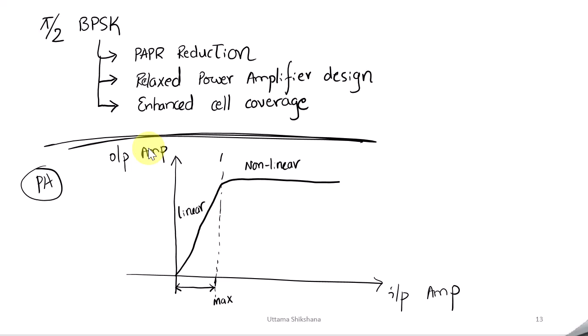We will also cover how we can enhance the cell coverage — so all three aspects will be covered. To start, let me discuss the power amplifier and its input-output characteristics. This is the input amplitude vs. output amplitude, showing the linear region of the power amplifier and the non-linear region.